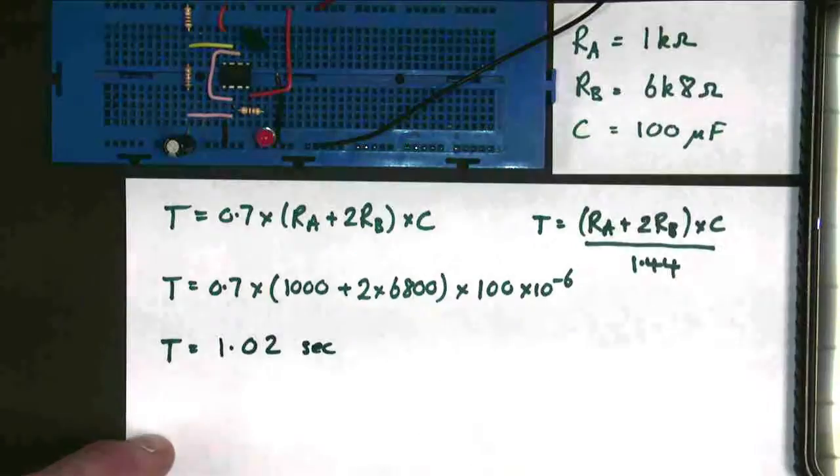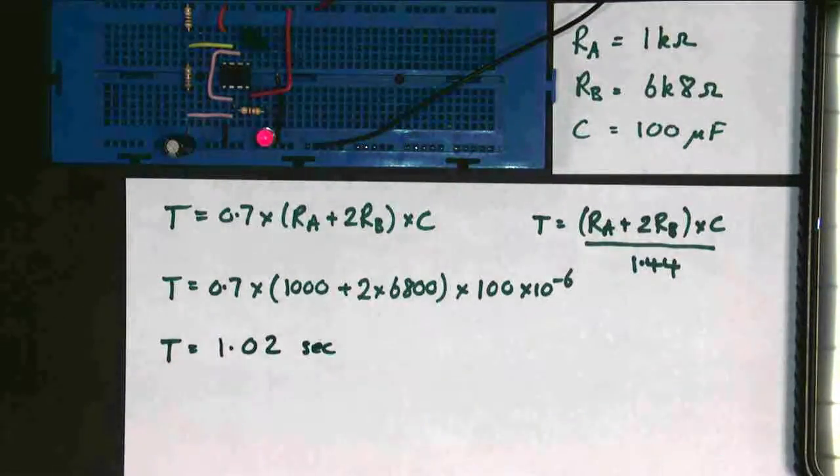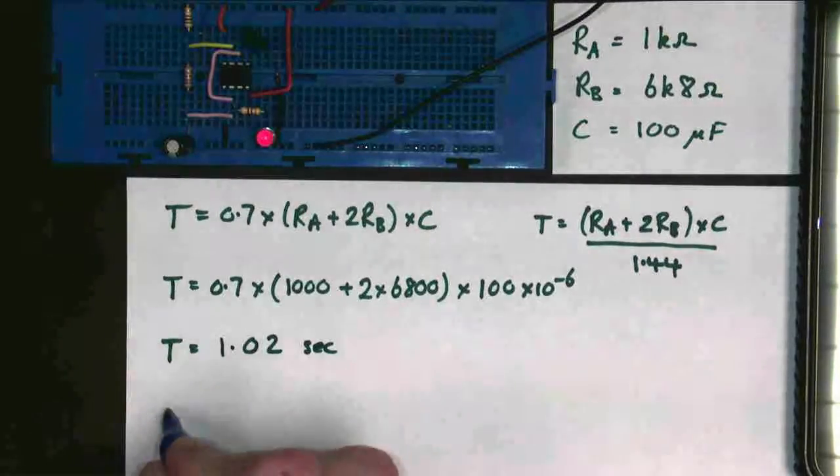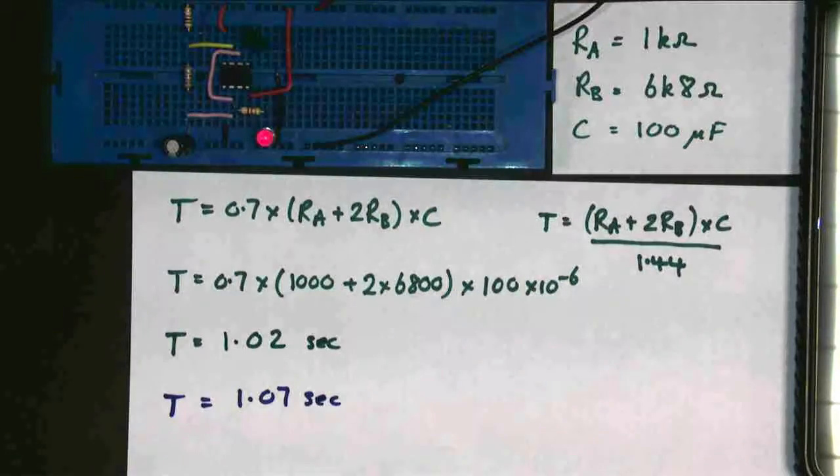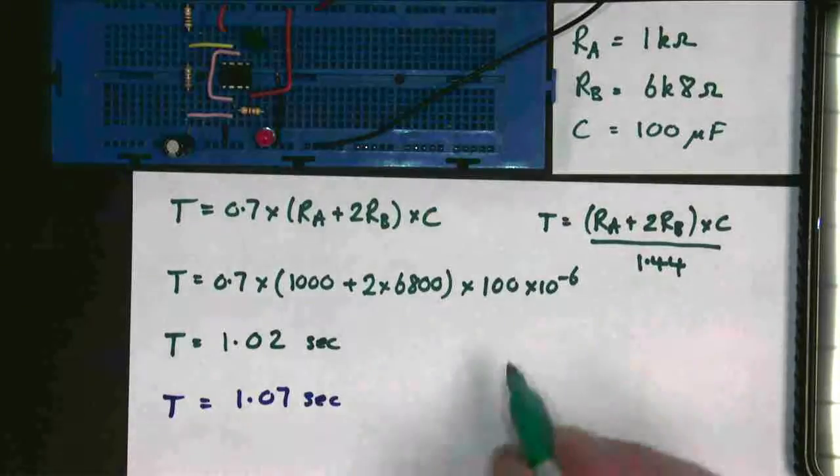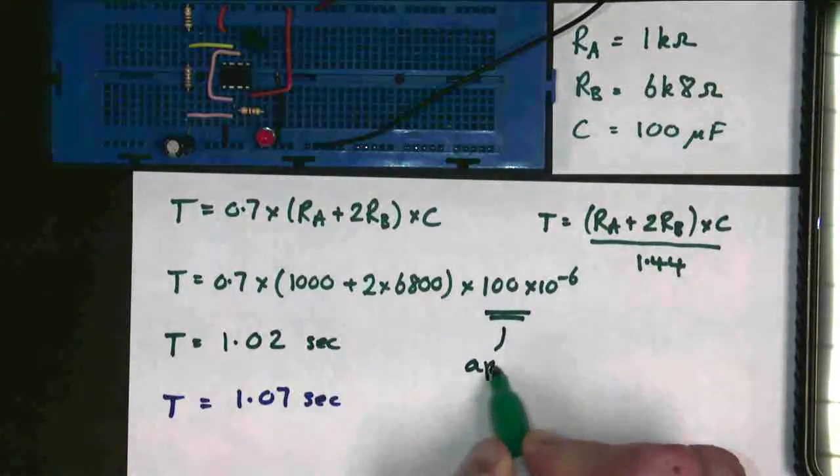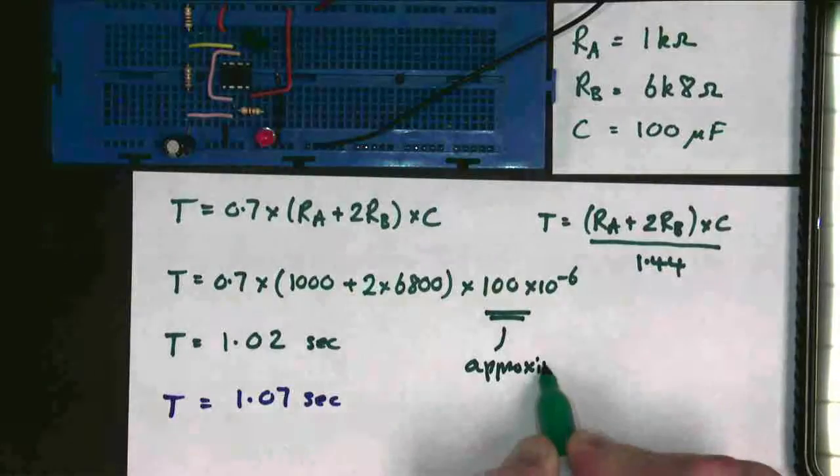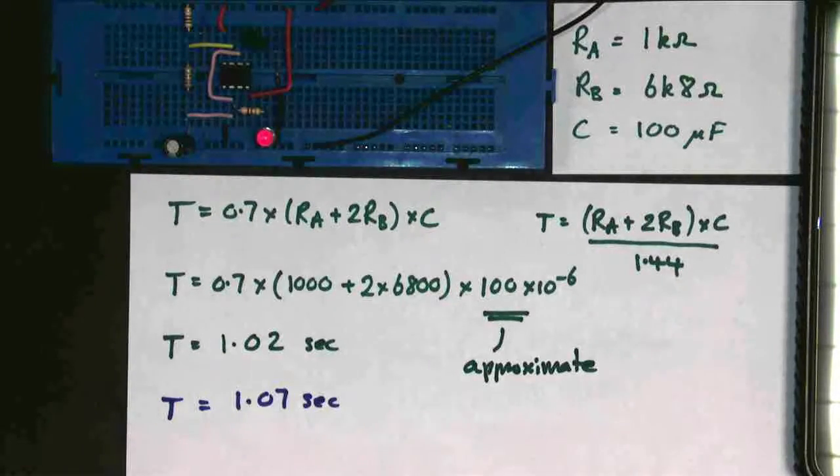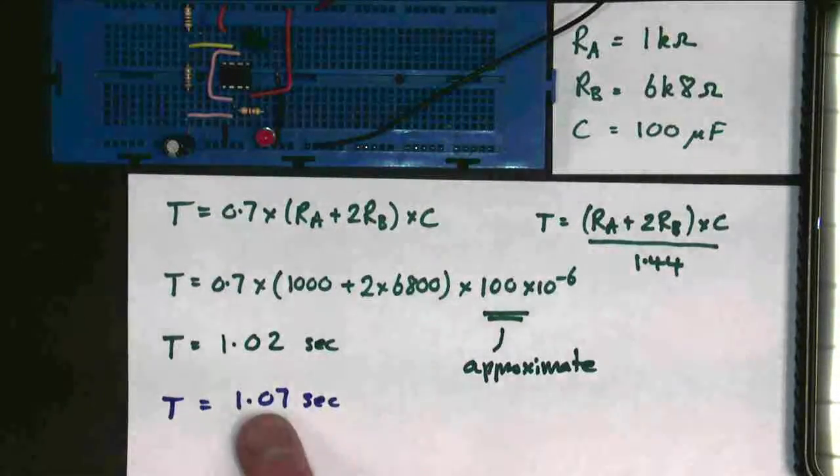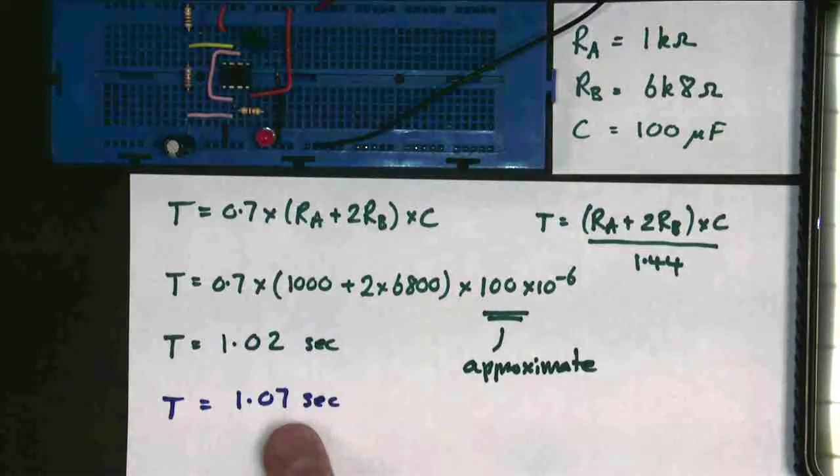And if you notice from before, our time period that we measured was T equals 1.07 seconds. And those two values are pretty close to each other. But why are they different? Well, they're probably different because this value here is normally approximate. The capacitor is unlikely to be 100 microfarads. It's got a tolerance of 20%, so it could be anything between 80 and 120 microfarads. And that would obviously make a difference to our equation. So if this equation works really well, we get the time that we actually measured.